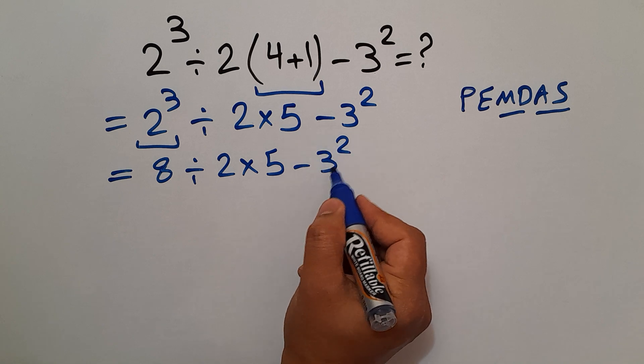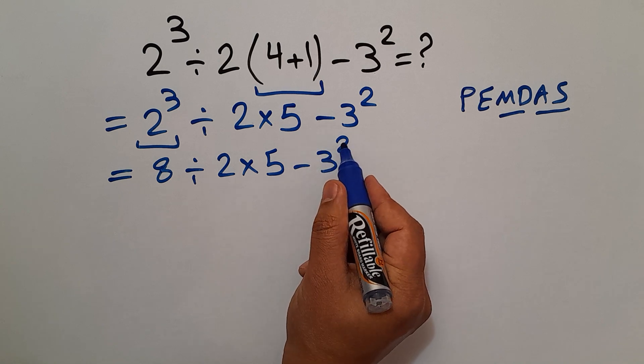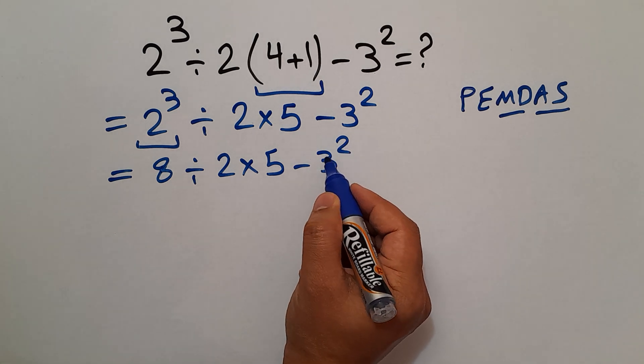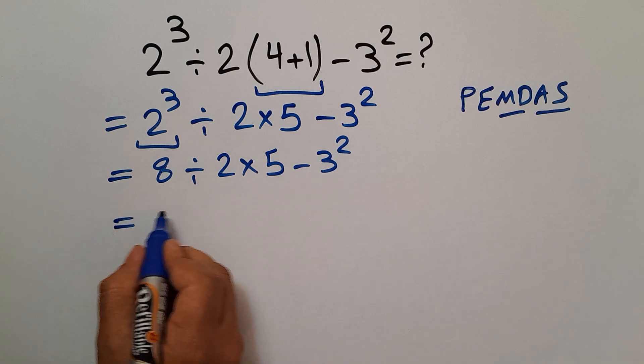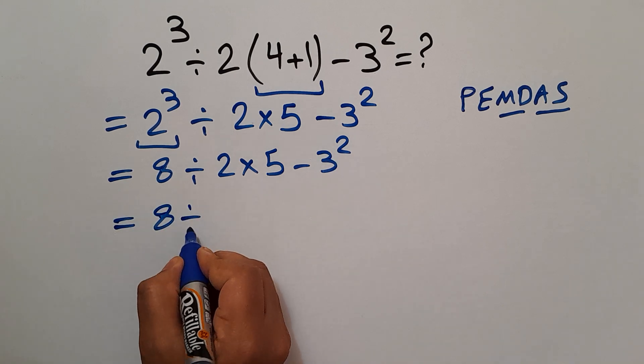Now we have to handle this exponent: 3² equals 9, so we have 8 ÷ 2 × 5 - 9.